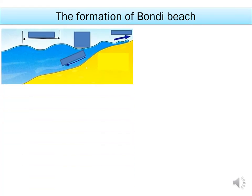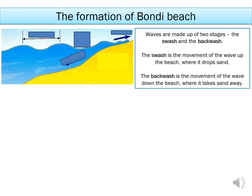We'll start off with this diagram, which shows a wave hitting the beach. The yellow part is the sand and the blue part is the water. Waves are made of two different stages: the first stage is called the swash and the second stage is called the backwash. When the wave moves up the beach following this arrow, that is called the swash. The swash moves up the beach and will always drop sand when it hits the land. The backwash is the arrow coming back into the ocean — when the wave comes back down the beach, sometimes taking sand away. When I use the word sediment, it just means sand and rocks.